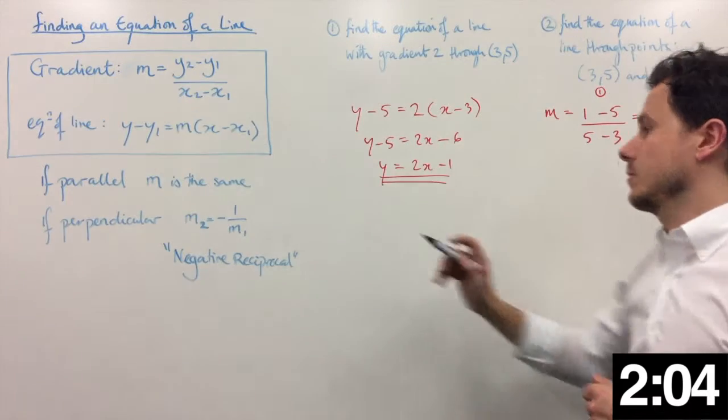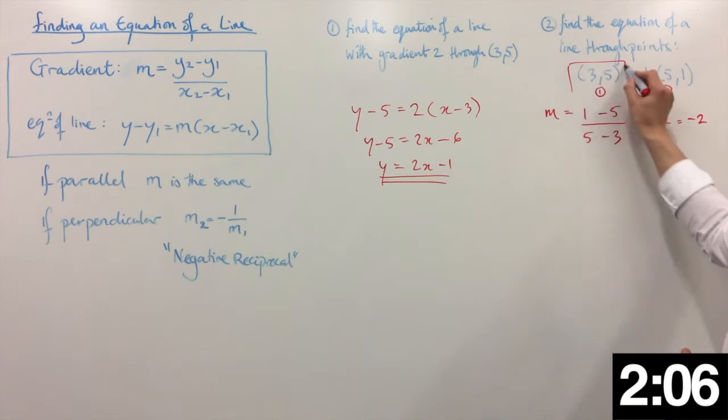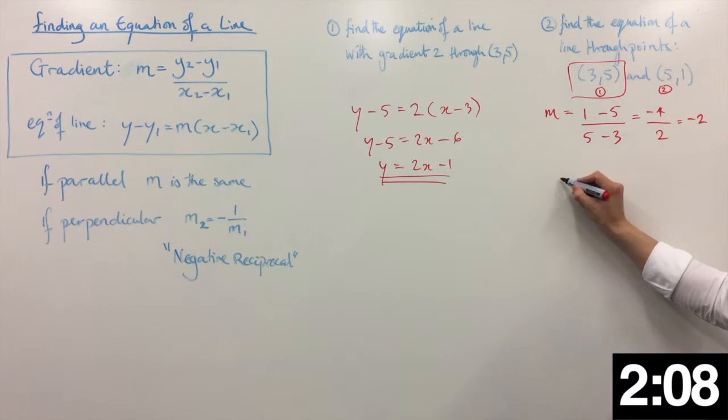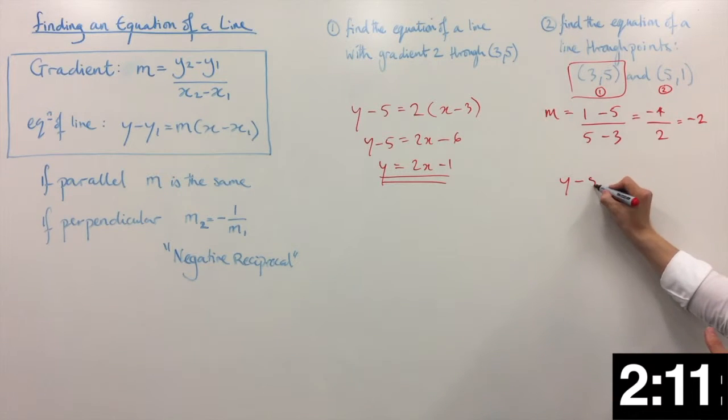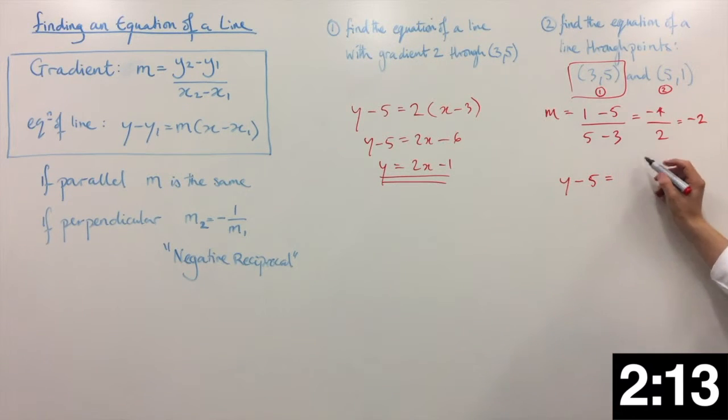Now we go back to this equation. Just, let's take this one, just for example. So y minus y1 is 5, equals the gradient we've got as minus 2, times x minus x1, which is 3.